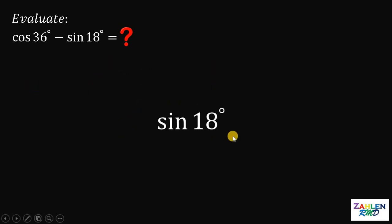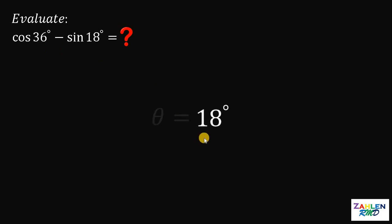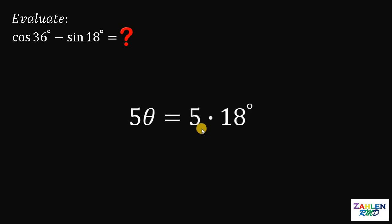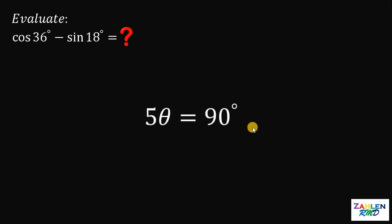Let's get the value of sine of 18 degrees first, before we solve cosine of 36 degrees. Let theta be equal to 18 degrees. Notice that if we multiply both sides by 5, this gives us 5 times 18 degrees, or simply 90 degrees. This is great because a lot of identities in trigonometry involve 90 degrees.